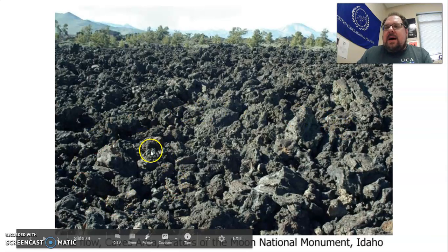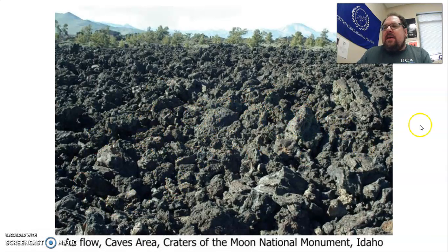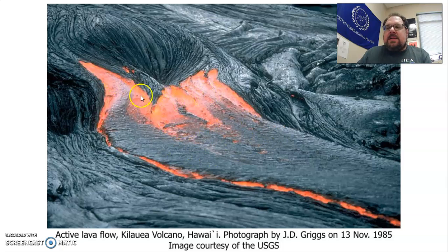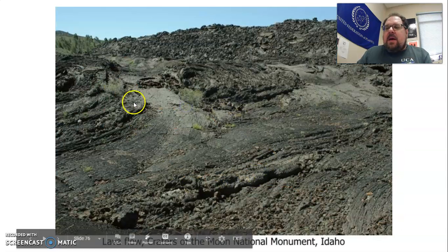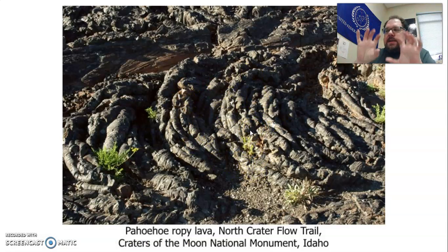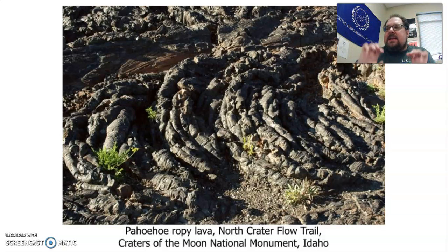Here's an aa flow — you can see it's very jagged and rocky. There's an active lava flow; the very top is solidified and you can see lava running underneath. Here are remnants of lava flows — it almost looks like water came through. This is pahoehoe ropey lava: it builds up in ropes as it comes out, makes little rolled shapes, solidifies, and more is pushed behind it, creating this ropey texture.